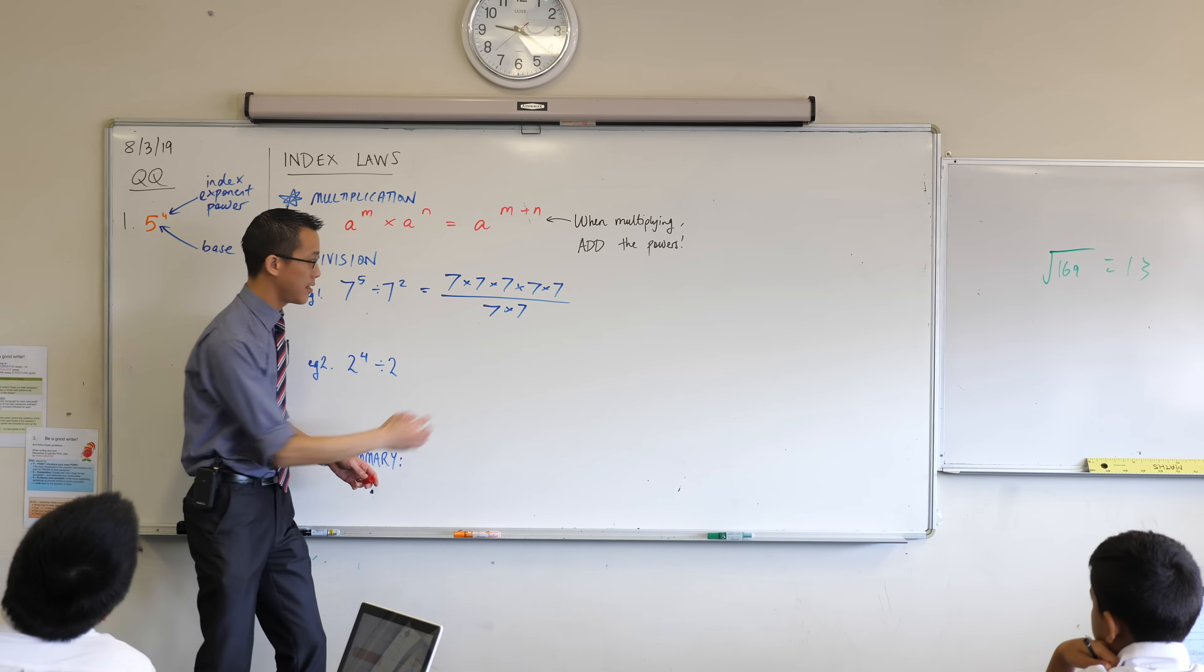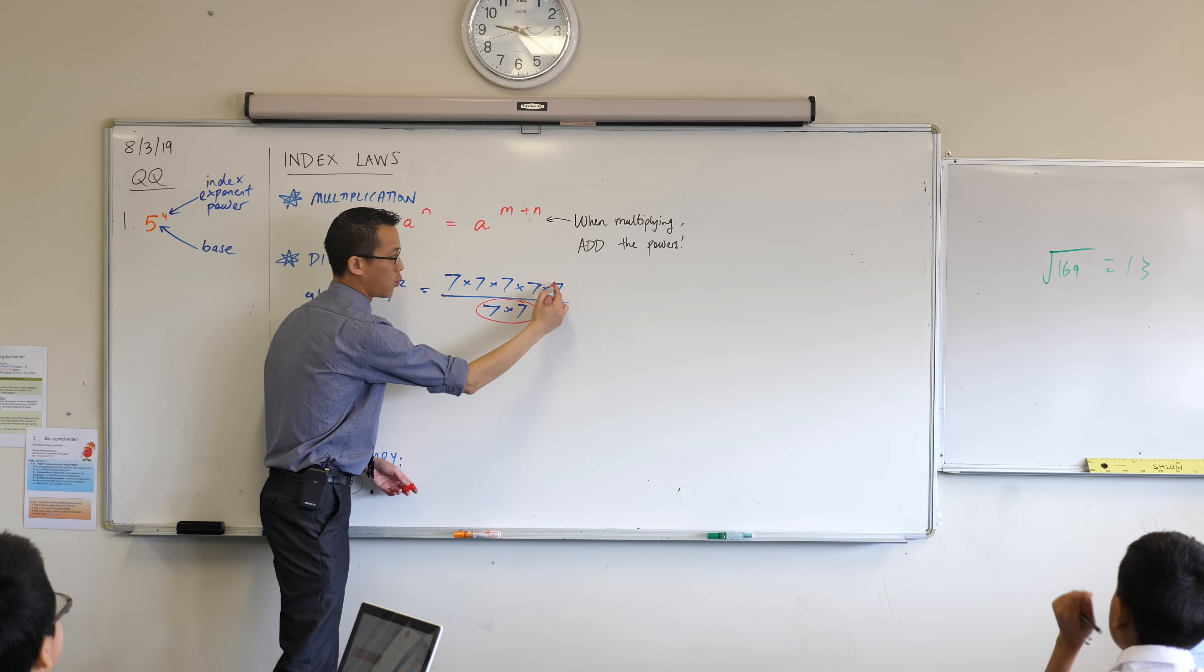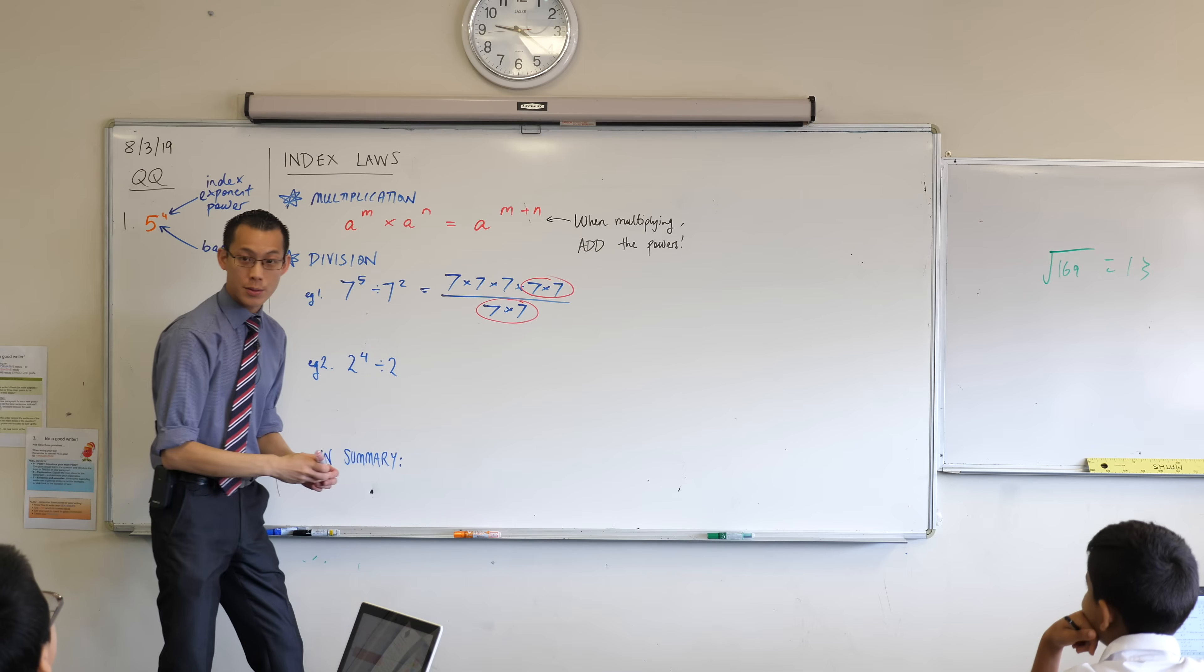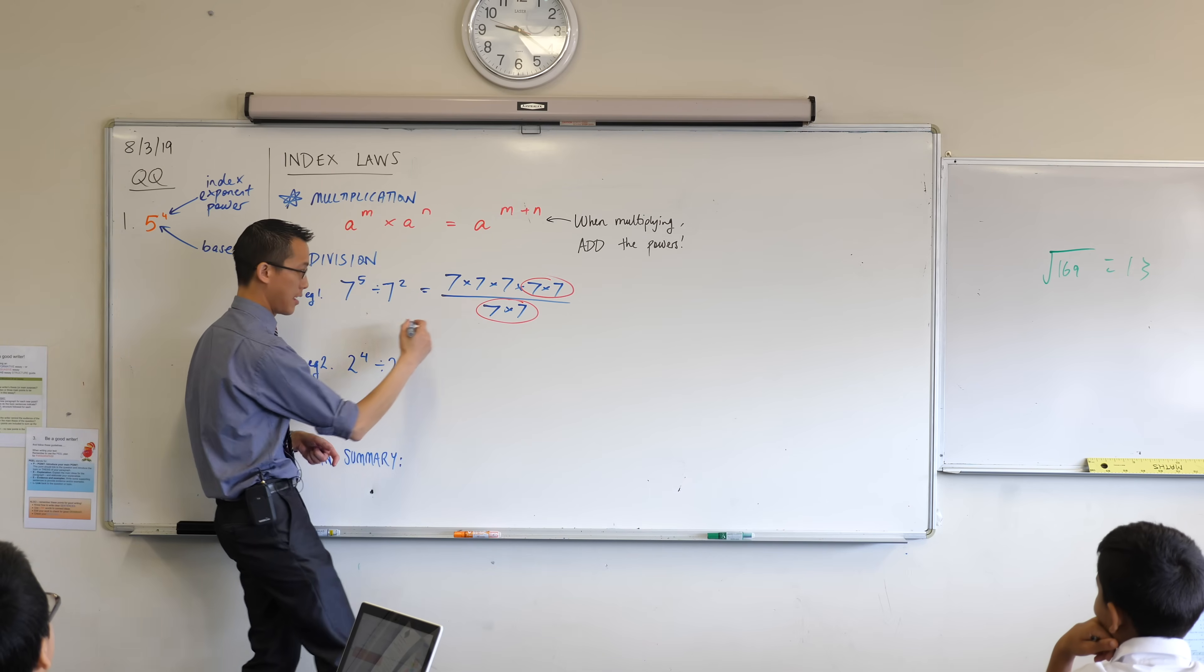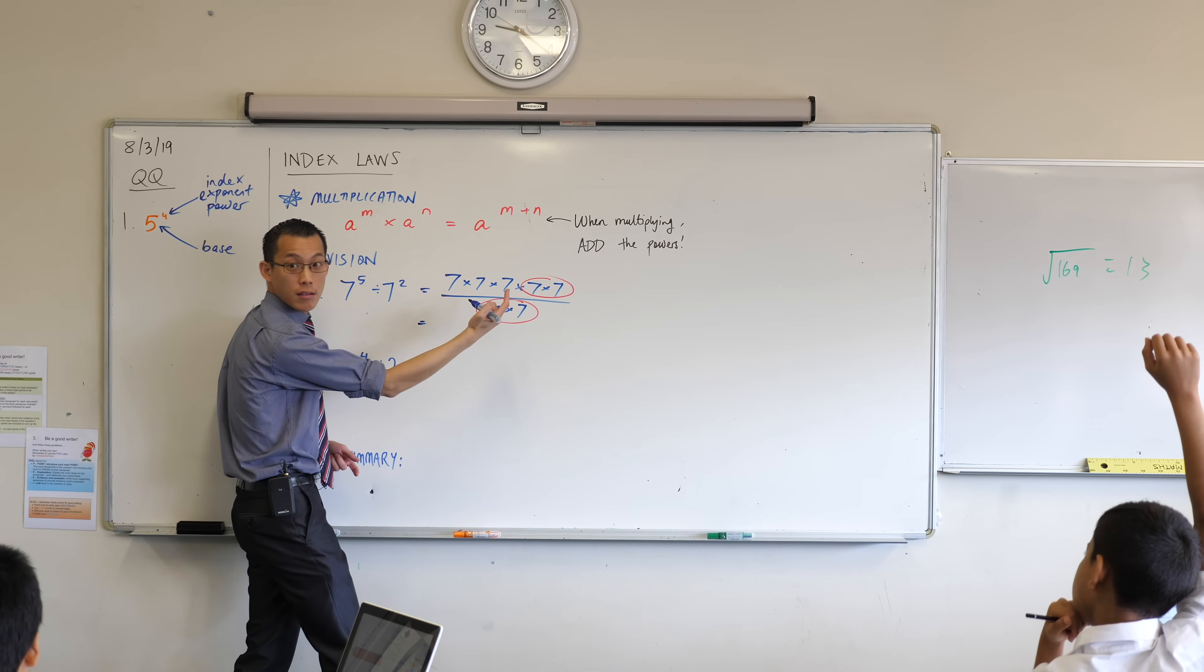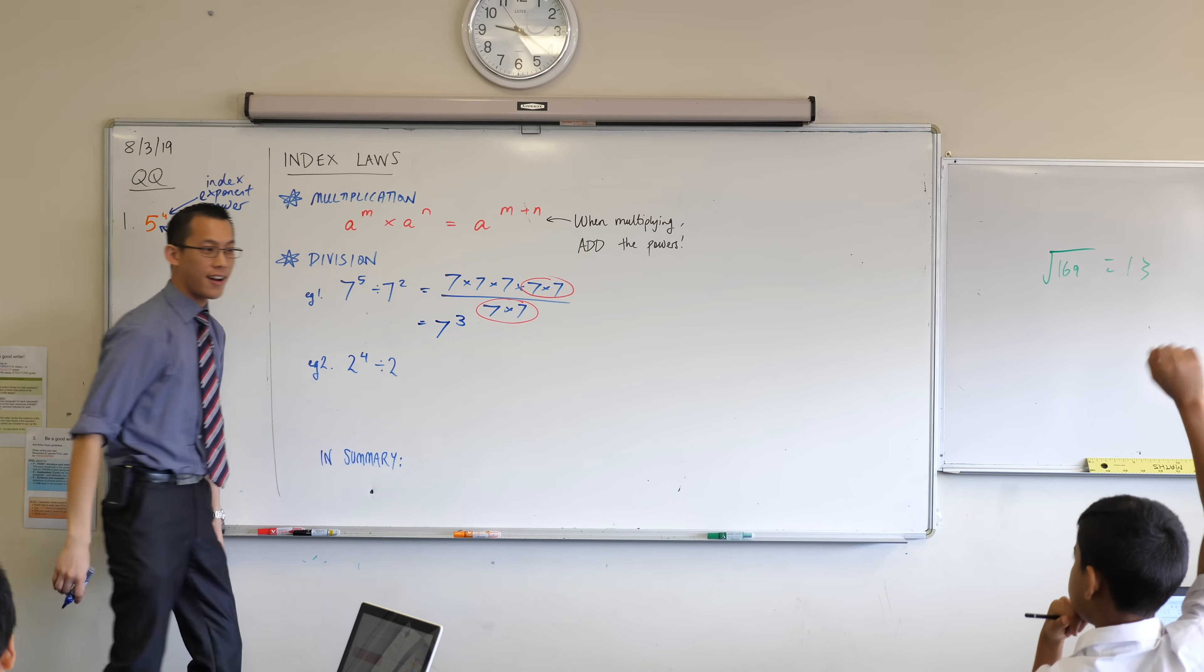Excellent. Yeah, I can totally see these two sevens here that match with these two sevens here, so these guys will cancel with these ones. So what I'll be left with after I get rid of all of those extra sevens? Yep, it's one, two, three, so it's 7—how do we say it?